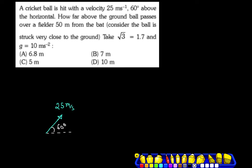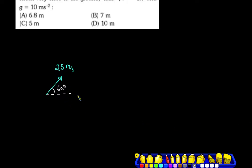How far above the ground does the ball pass the fielder who is 50 meters away? So here the fielder is at 50 meters distance.